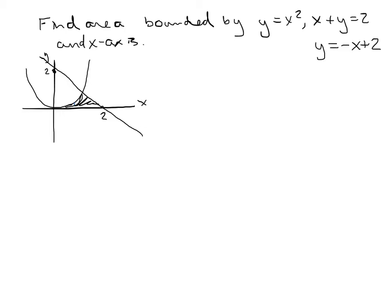Similar to before, on the left part of the region the top function is y equals x squared and the bottom is y equals 0. But to the right, the top function changes. So we have to split this into two different integrals.